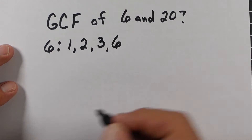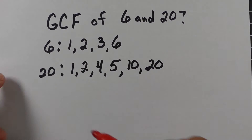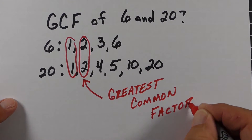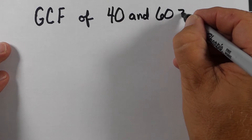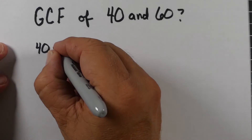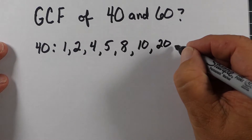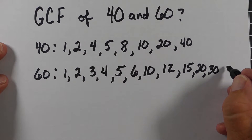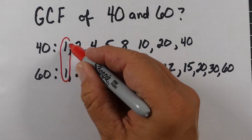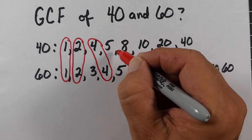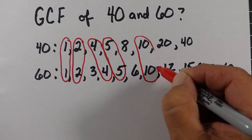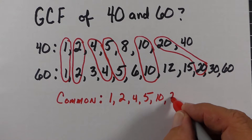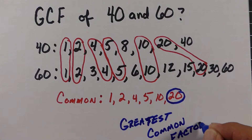Here's another one — the greatest common factor of six and twelve. The factors of six are one, two, three, and six, and the factors of twelve we already know. When we circle the ones they share, we get one, two, and the greatest common factor is two. Now for forty and sixty: we find all the factors of forty — one times forty, two times twenty, four times ten, and so on — and do the same for sixty, which has many more factors. We circle every one they share in common. The greatest common factor is twenty.